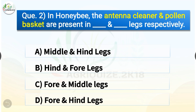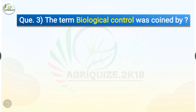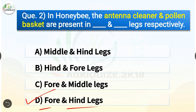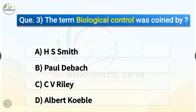Question number two: In honeybee, the antenna cleaner and pollen basket are present in which legs respectively? The options are: middle and hind legs, hind and fore legs, fore and middle legs, or fore and hind legs. The correct answer is option D — fore and hind legs. In honeybees, the fore legs are modified for antenna cleaning and the hind legs for pollen collection.